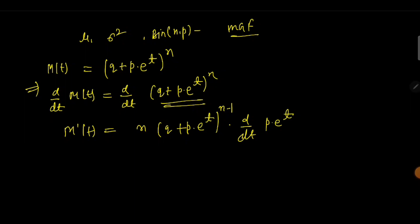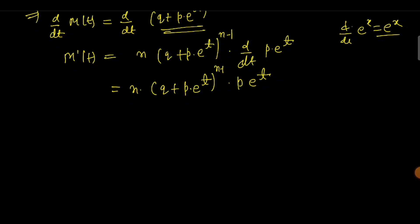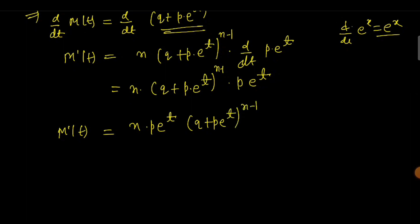So we get n·(q + p·e^t)^(n−1) times p·e^t, because the derivative of e^t is simply e^t. This gives us the first derivative of the moment generating function: M'(t) = n·p·e^t·(q + p·e^t)^(n−1).